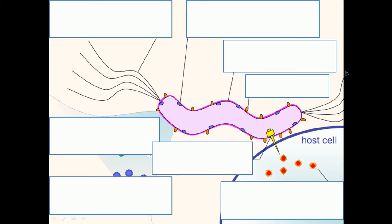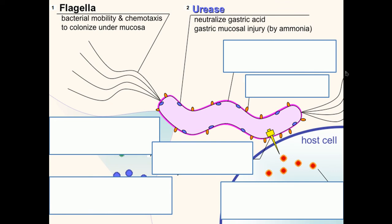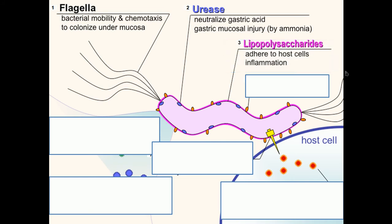Once colonized on the stomach, the bacteria secrete certain chemical factors, protein factors, and enzymes that cause damage to the epithelial cell. There are seven such factors. First is flagella, which allows the bacteria to migrate through the stomach. Second is urease, which neutralizes gastric acid by converting urea into ammonia and carbon dioxide. Third is lipopolysaccharide (LPS), which helps in adherence to host cells and causes inflammatory response, acting as an endotoxin to produce toxic shock conditions.